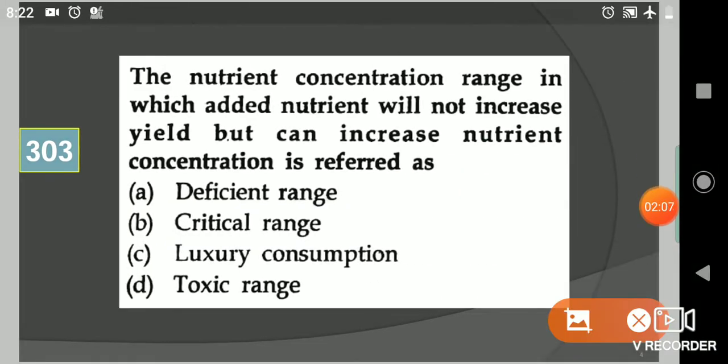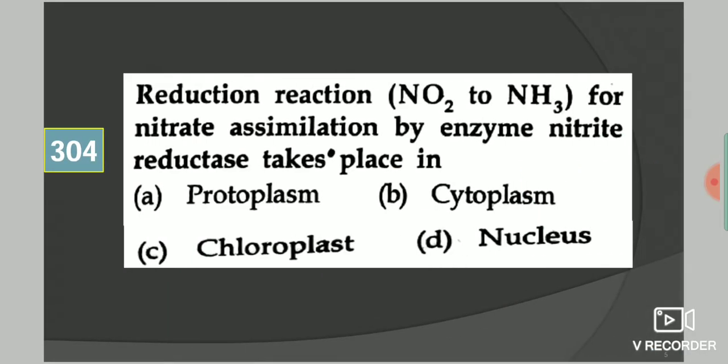Come to the next question: The nutrient concentration range in which added nutrient will not increase yield but can increase nutrient concentration is referred as? Your options are deficient range, critical range, luxury consumption, toxic range. Your answer is luxury consumption, option number C.